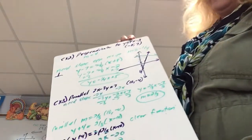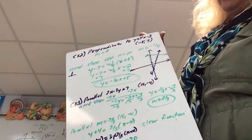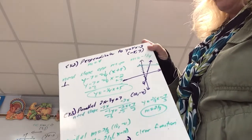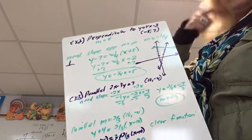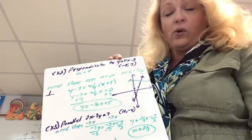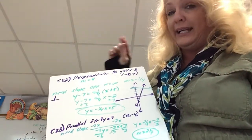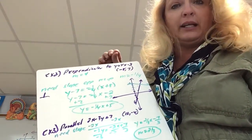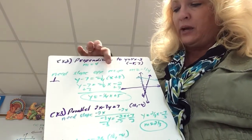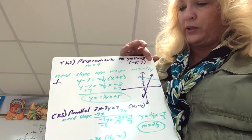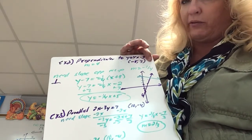Now let's go to example 2. We're writing an equation of a line that's perpendicular to that same line but going through the point (negative 8, 7). First, I identify the slope of the given line, which is 4. A line that's perpendicular needs the opposite reciprocal, which is negative one-fourth.